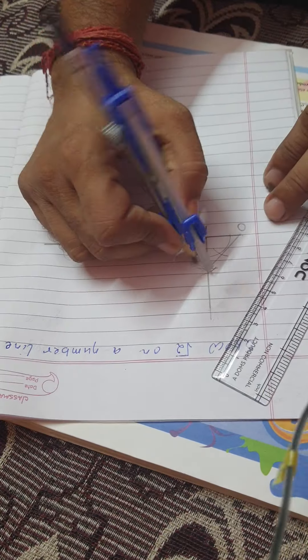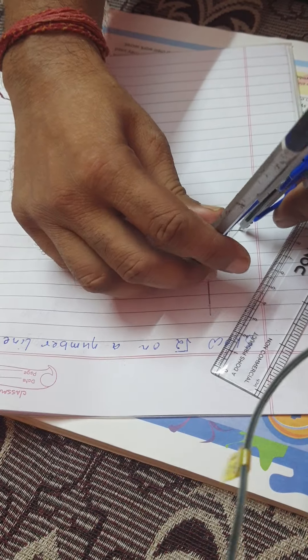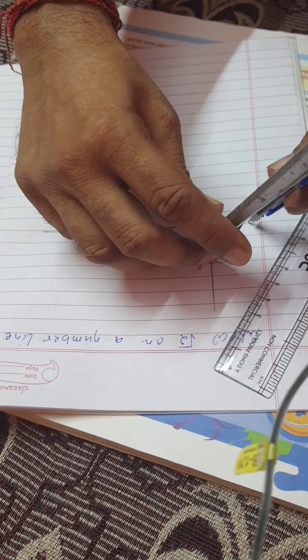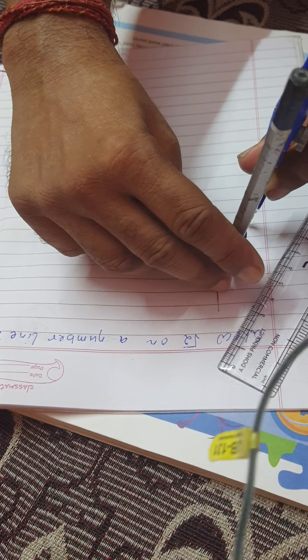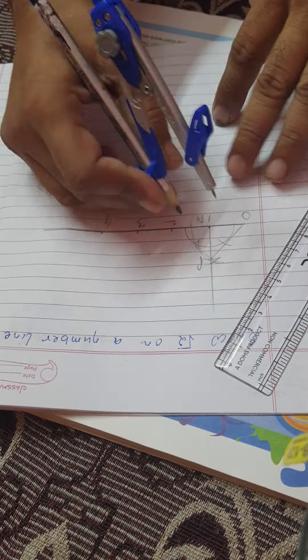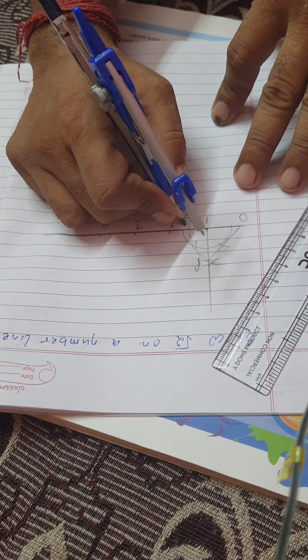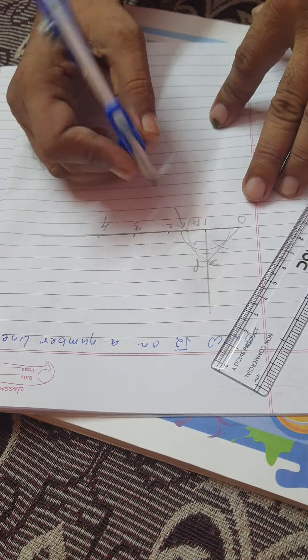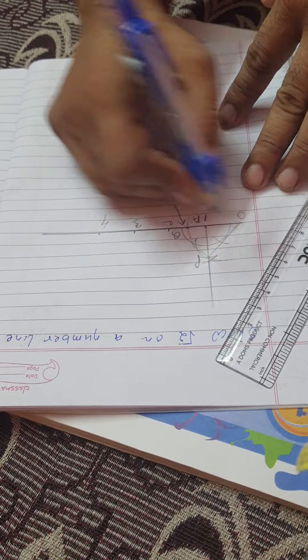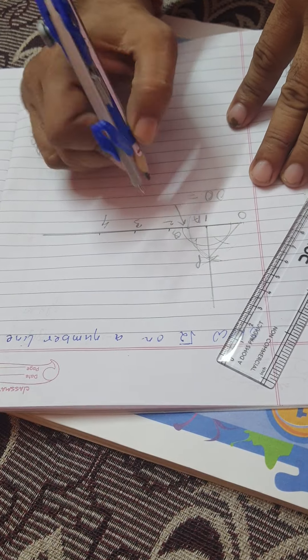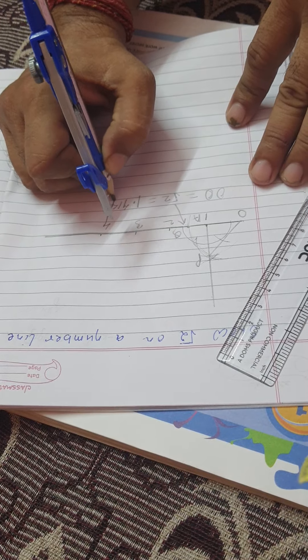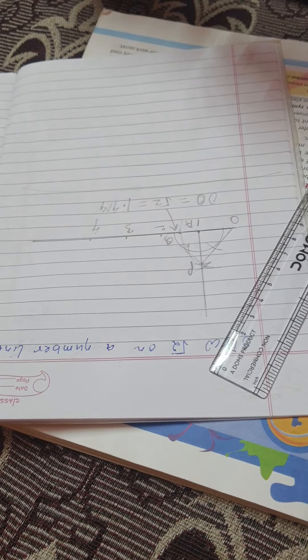Now we can write this point as P, so OP is root 2. Now we can draw a line, and at the point where it is intersecting, we take this as Q. This Q point, OQ, represents root 2, whose value is 1.414. I hope you understood this. Thanks for watching.